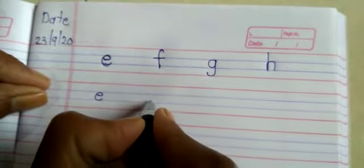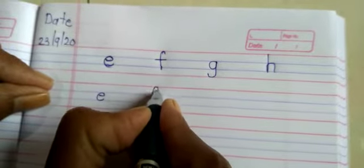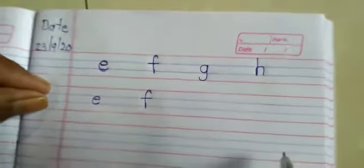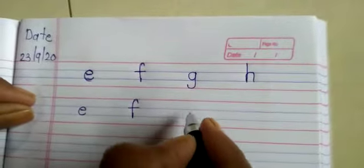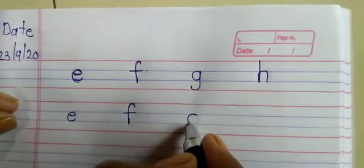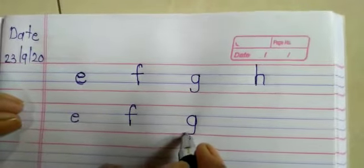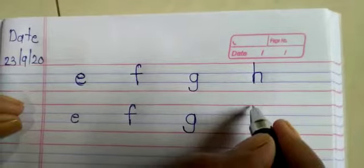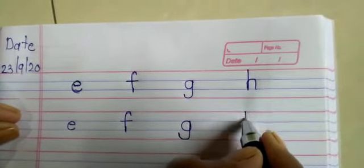Next letter small f. Next letter small g. Write down like this. Next letter small h.